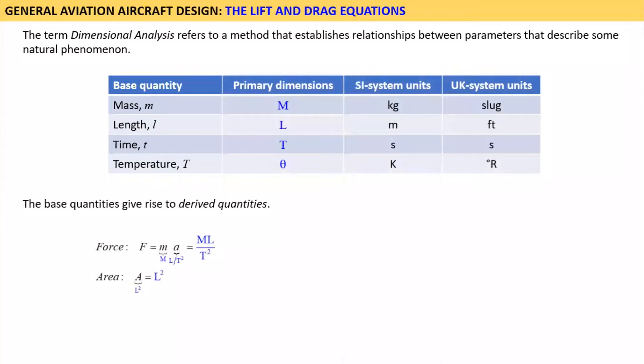Therefore, the derived quantity pressure, which is force per area, can be written as shown, M times L divided by T squared divided by L squared. This can be shortened further, as shown here.